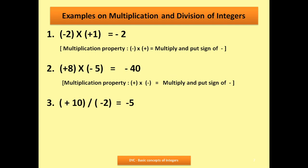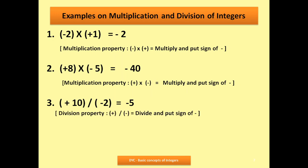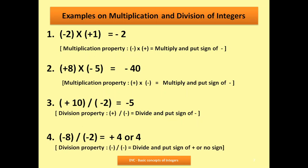Division example: 10 divided by minus 2. 10 is easily divisible by 2, giving 5. One is positive and one is negative, so the answer is minus 5. Division property: divide but put the sign of minus. Next: minus 8 divided by minus 2. 8 divided by 2 is 4, and minus minus cancels — so I write plus 4 or simply 4. The rule: divide and put the sign of plus.